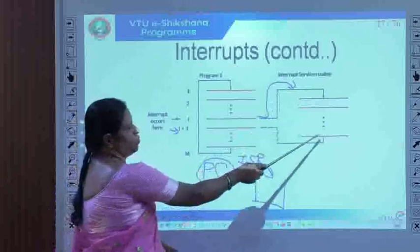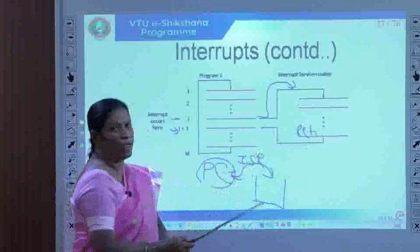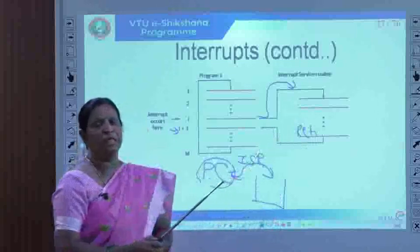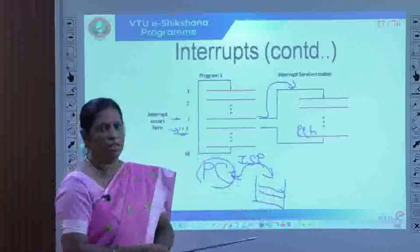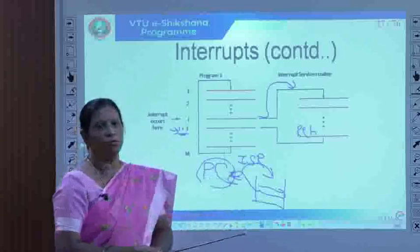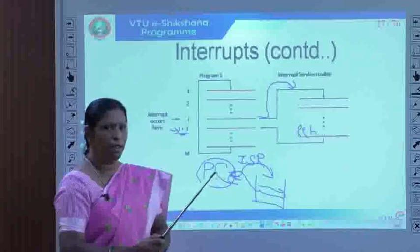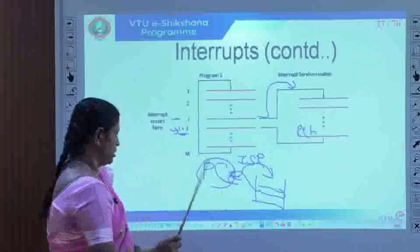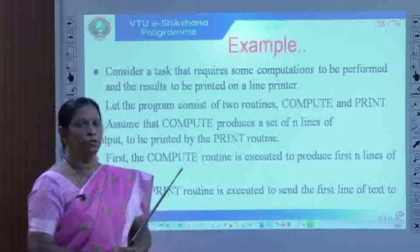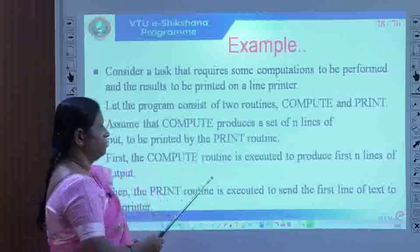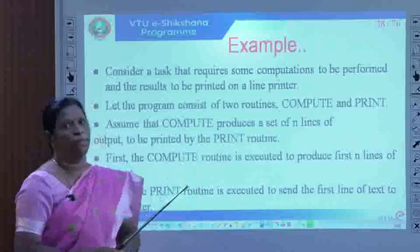After the execution of the interrupt service routine, when the return statement is executed, the PC register is restored back. The return address (i+1) that was saved on the processor stack is restored into the program counter. This is how the interrupt and ISR are executed upon receipt of an interrupt request. Now consider a task requiring computation with results to be printed on a printer.